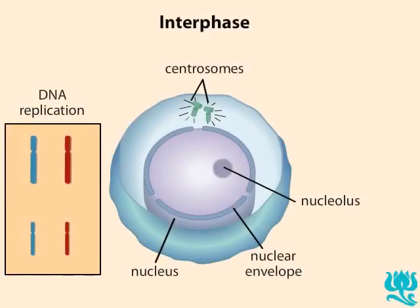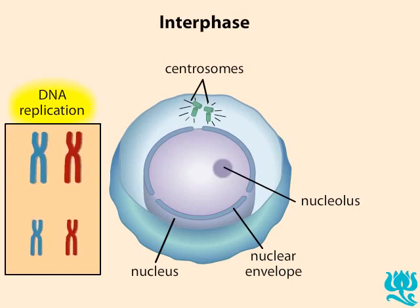Before meiosis begins, in the preceding interphase, DNA replication takes place. At this point, the chromosomes are not condensed and are not visible under a light microscope. However, we depict them in a condensed manner so that you can see that the cell replicates each chromosome to form two chromatids.